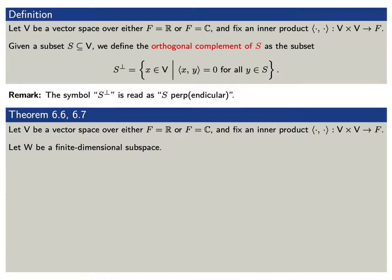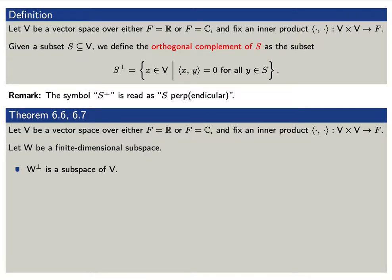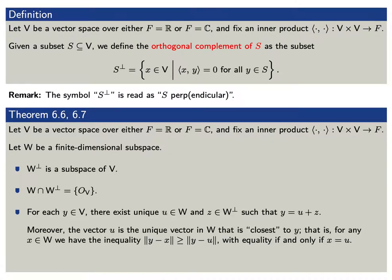We have a few results. Let's say that w is a finite dimensional subspace of our vector space v. Then w_perp is a subspace of v. The intersection of w and w_perp consists of just one point, namely the origin. For every y in our vector space v, there are unique vectors u in our subspace w and z in the orthogonal complement w_perp, such that y equals u plus z. Moreover, the vector u in our subspace w is the closest vector in w to our vector y. Finally, if v is finite dimensional, then the dimension of w plus the dimension of w_perp is equal to the dimension of v.